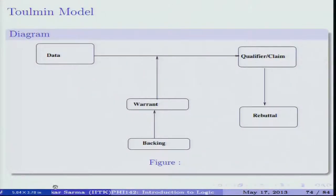From the diagram, the warrant is what connects data and claim; the arrow shows the warrant serving as a bridge. A warrant is like a most general kind of principle — for example, a general principle that all of us should drive on the left side of the road. These general principles need to be supported by backup statements to give the warrant strength.